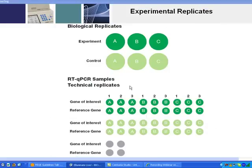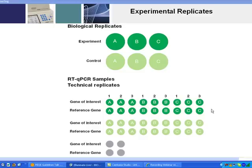There are two types of replicates: biological replicates and technical replicates. In the simplest experiment assessing a control condition versus an experimental condition, with three biological replicates for each condition, when we run a plate we're going to split each biological replicate — each resulting cDNA sample — into three technical replicates, so three separate wells for each cDNA sample on the plate.